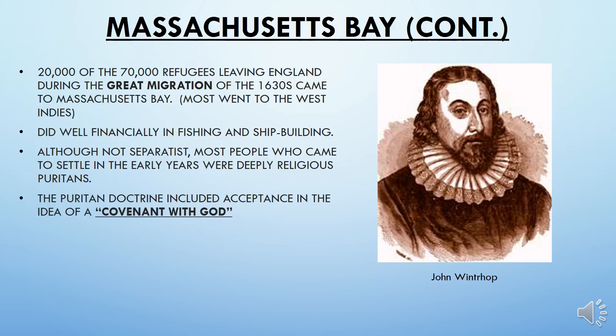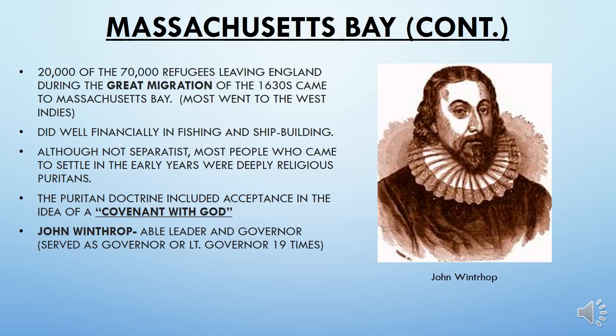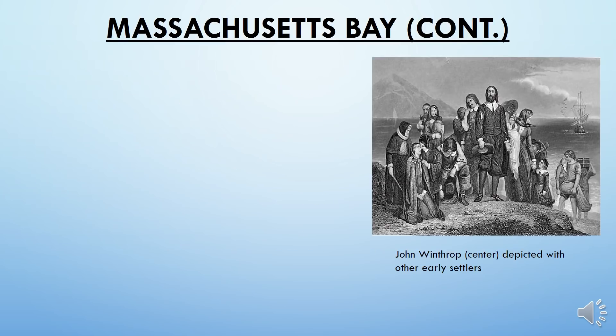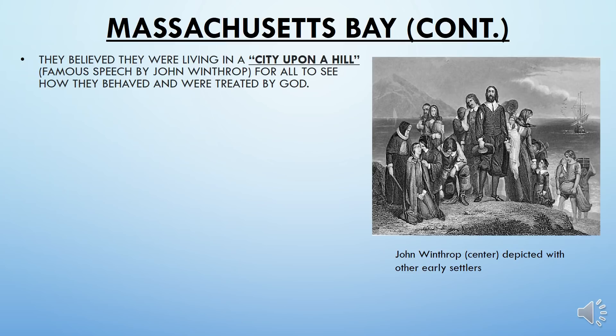The Puritan doctrine includes acceptance and the idea of a covenant with God. John Winthrop was their able leader and served as governor for 19 different terms. Winthrop gave an extremely famous speech called the 'City Upon a Hill' — a primary source document you must take note of. It's very AP-worthy and has appeared on the AP exam several different years. In that speech, Winthrop said he wanted Massachusetts Bay to be the shining light or beacon for the world about how they were treated by God based on how well they behaved.